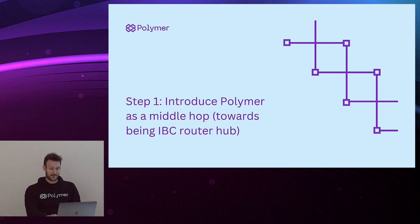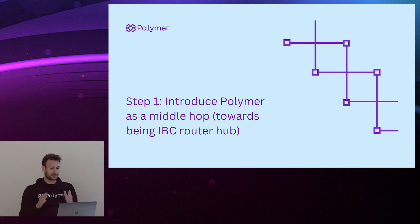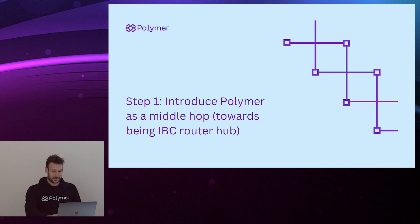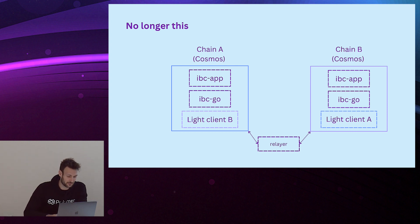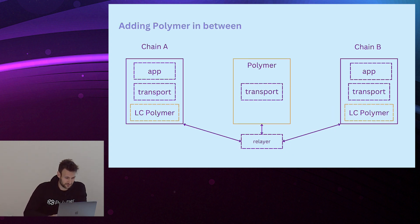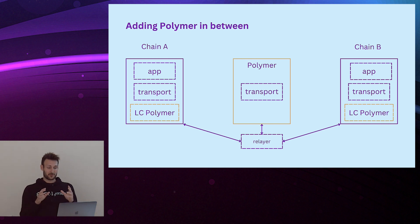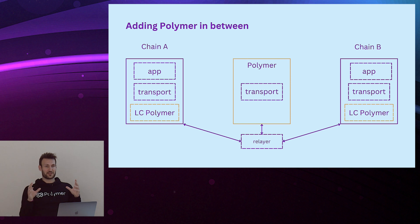So how does Polymer come in? We have a number of innovations that will enable chains not natively compatible with IBC to actually have IBC brought to them. First step is introducing Polymer as a middle hub. We want to ultimately connect an IBC-incompatible chain by adding Polymer in between. This introduces the concept of multi-hop. Polymer's consensus, which is Tendermint, has to be tracked by chain A and chain B, and on Polymer we need to track a light client for chain A and a light client for chain B.